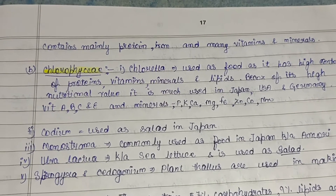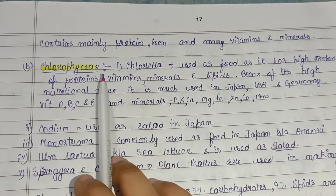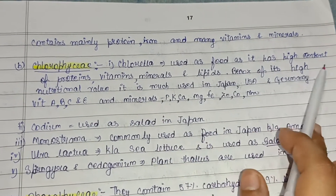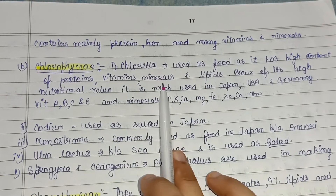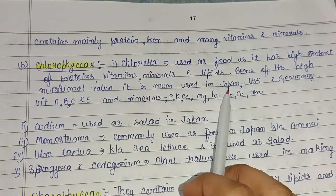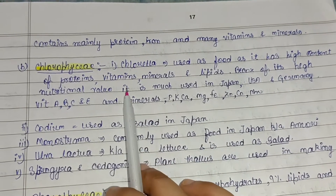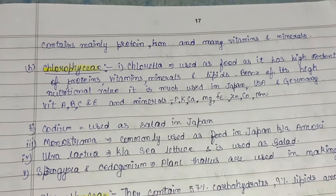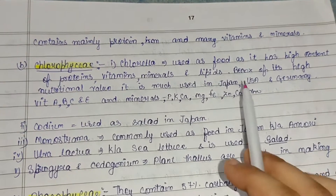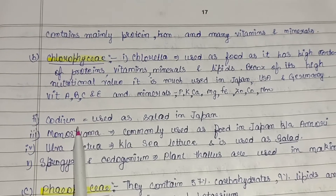In Chlorophyceae, Chlorella is used as food due to its high content of protein, vitamins, minerals, and lipids. Because of its high nutritional value, it is widely used in Japan, the USA, and Germany. It contains vitamins A, B, and C, and minerals including potassium, phosphorus, calcium, magnesium, iron, zinc, cobalt, and manganese.